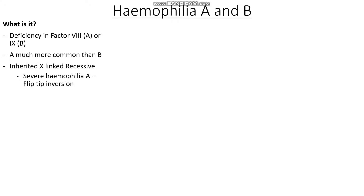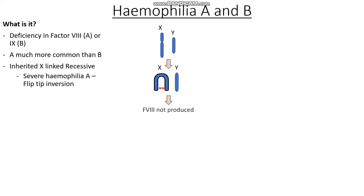So how does this come about? Here you can see we have an X chromosome and the Y chromosome, and the X chromosome is significantly longer in length than the Y chromosome. This sets up an interesting situation where the X chromosome is able to bend around itself, putting two very special regions next to each other and allowing genes from this region to cross over. This essentially means that the factor VIII gene can be disrupted, and therefore factor VIII is not formed.